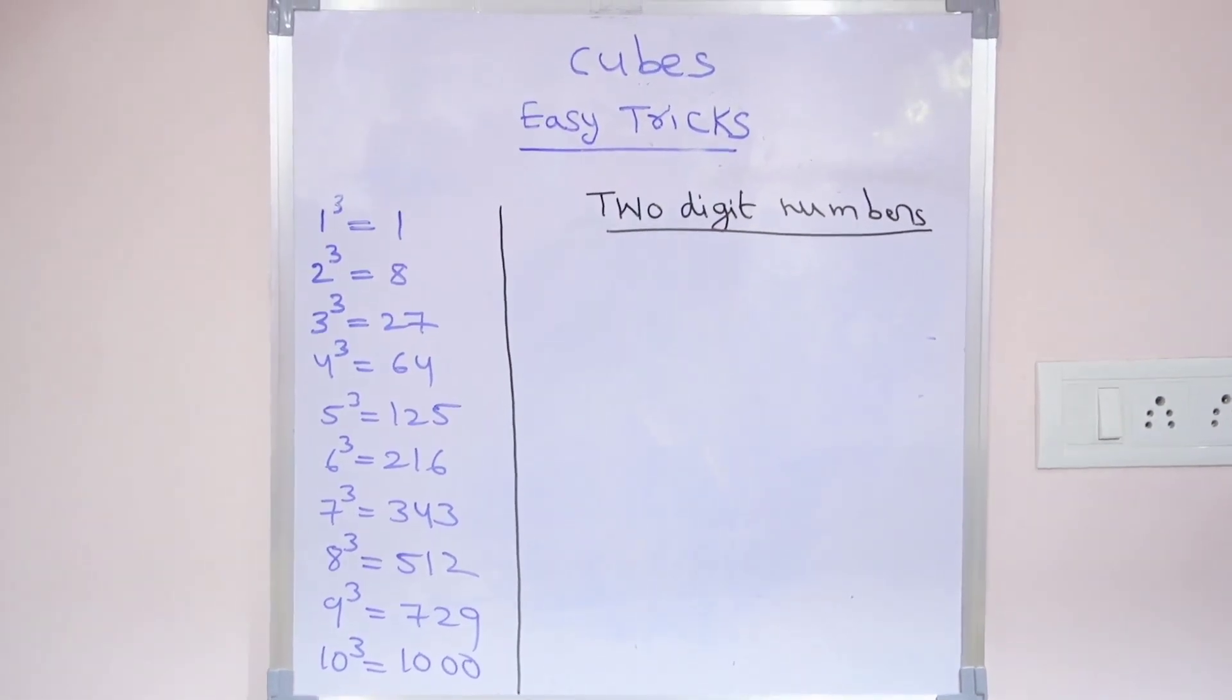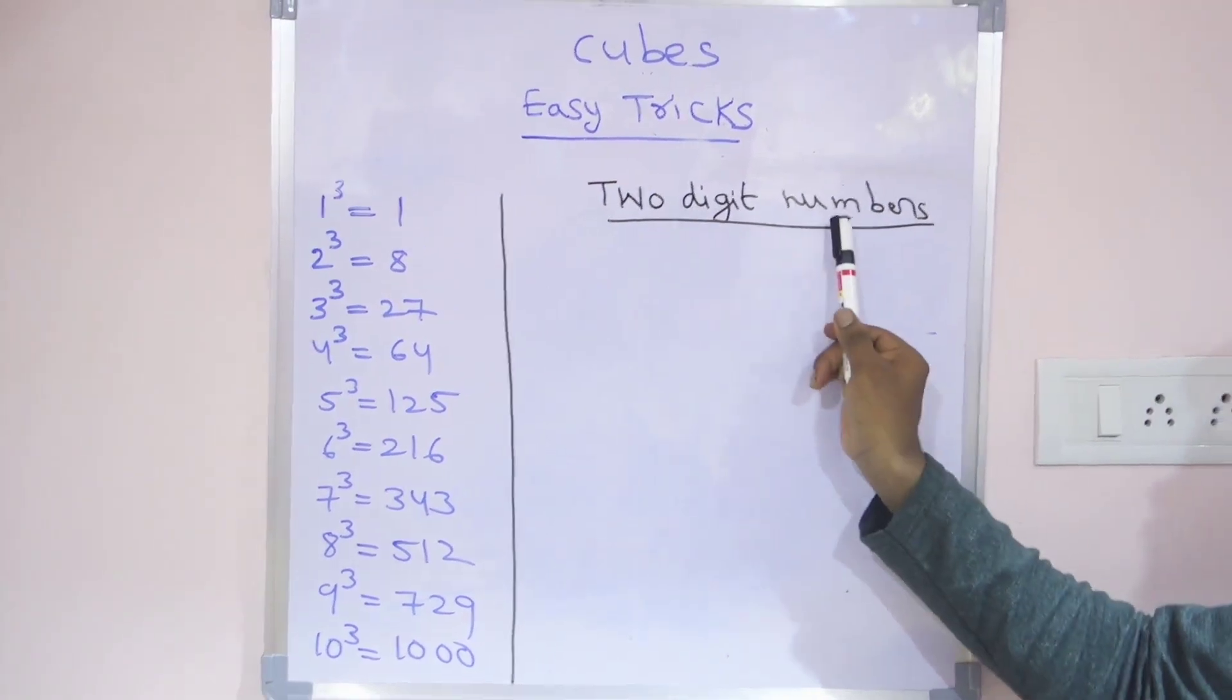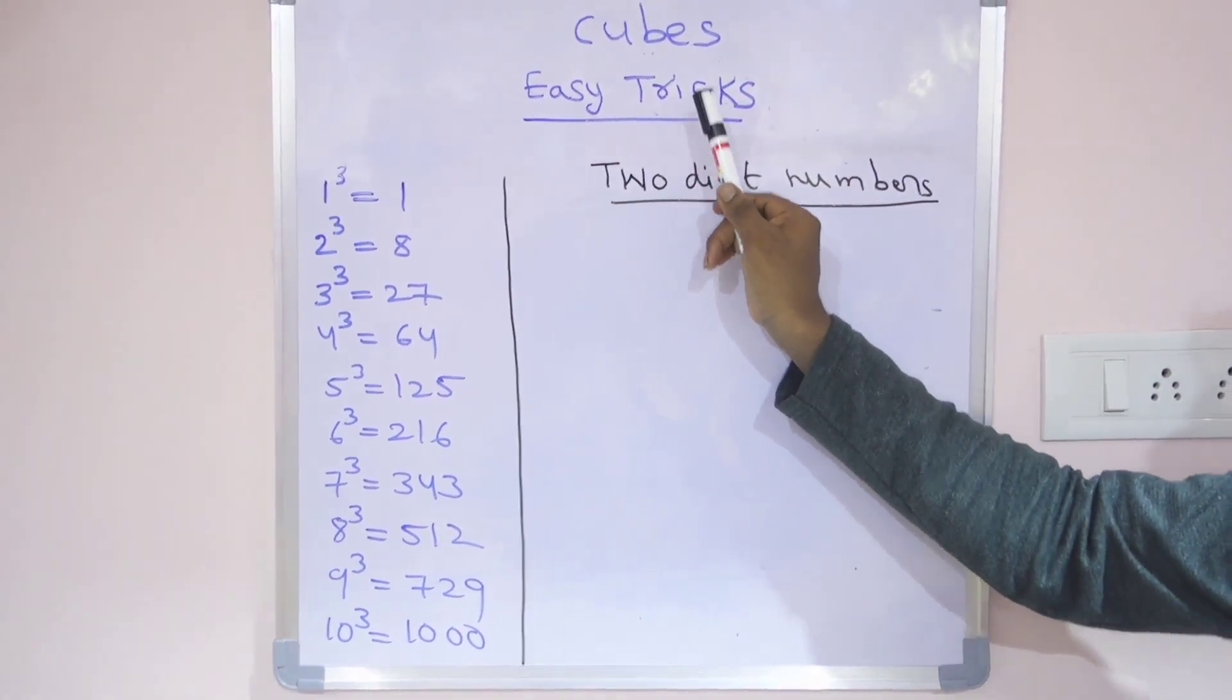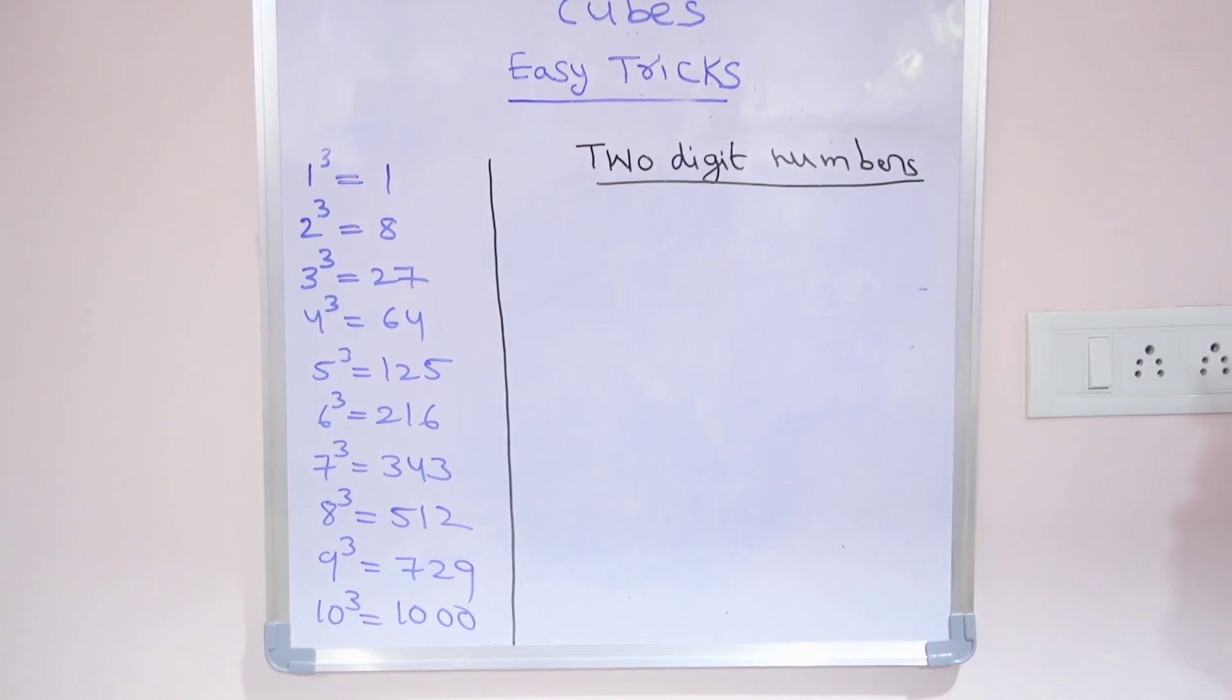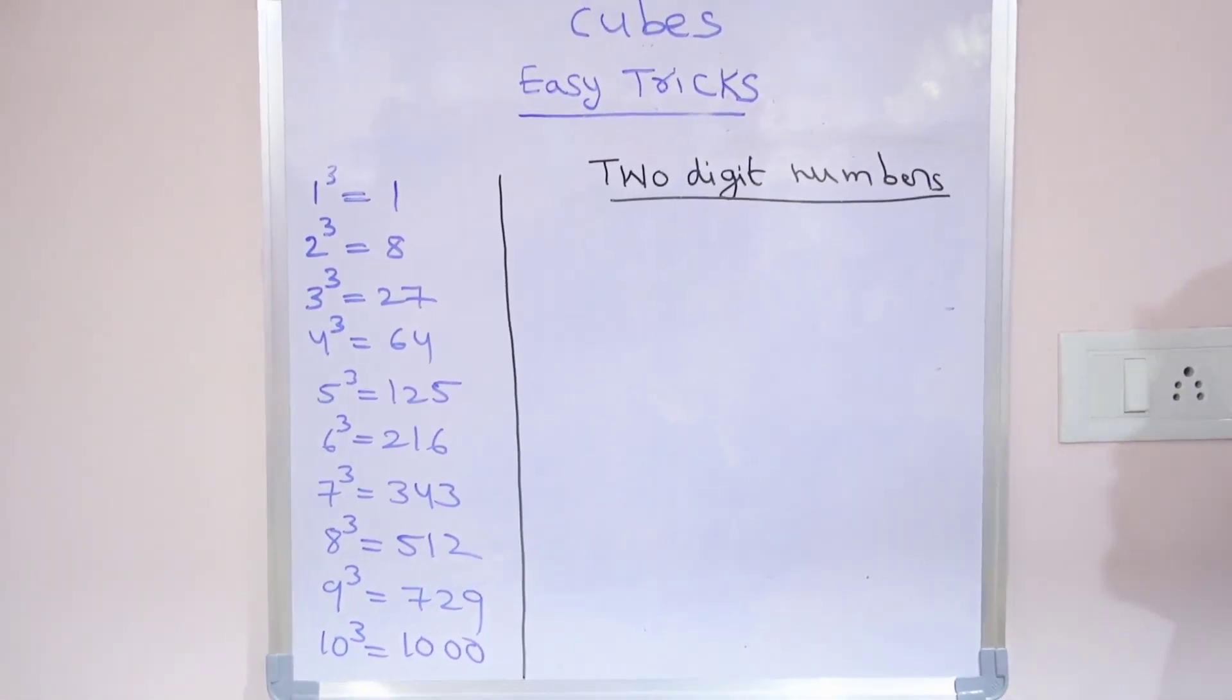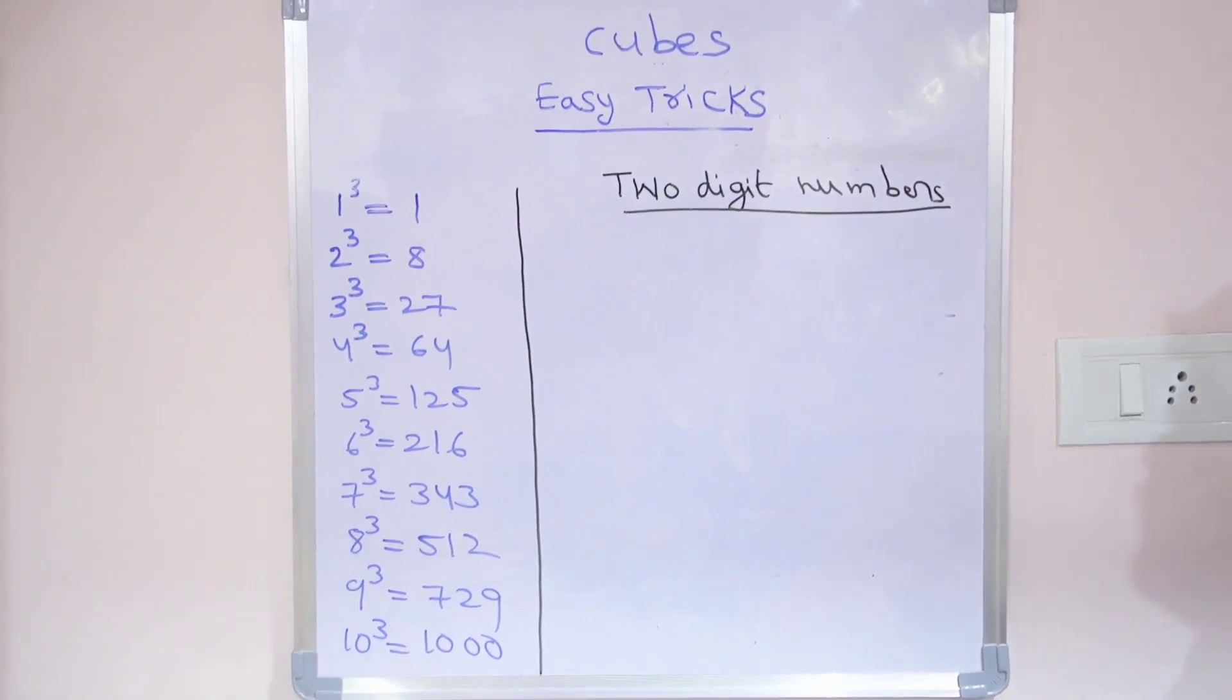Welcome to Math Tech Channel. Today we discuss cubes easy tricks. For two digit numbers, if you want to find the cubes, first we need to back up to 10 cube. 10 cube is a two digit number, so I will explain now.